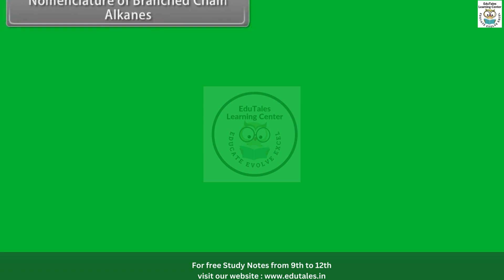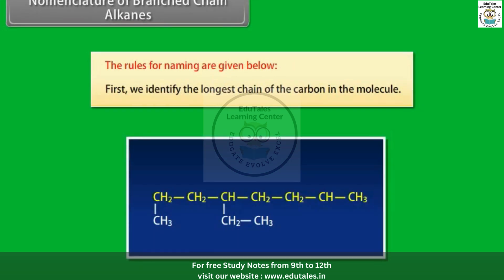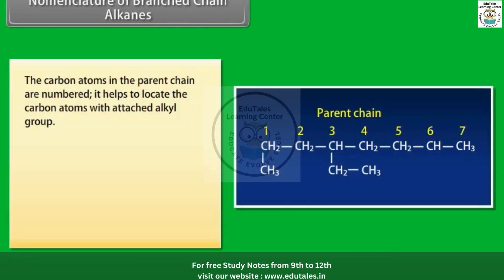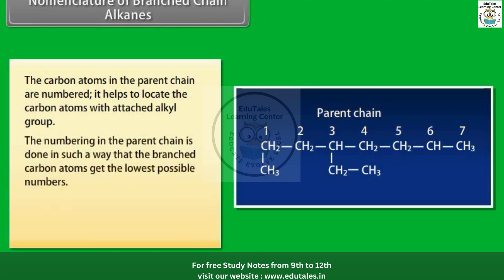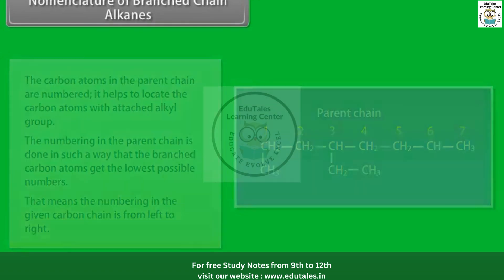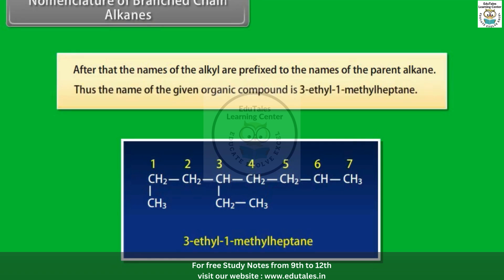Nomenclature of branched-chain alkanes — rules: First, identify the longest carbon chain in the molecule. Number the carbon atoms in the parent chain to locate carbons with attached alkyl groups. The numbering is done such that the branched carbon atoms get the lowest possible numbers — that is, numbering goes from left to right. Then, the names of the alkyl groups are prefixed to the name of the parent alkane. For example, the name of the given compound is 3-ethyl-1-methylheptane.